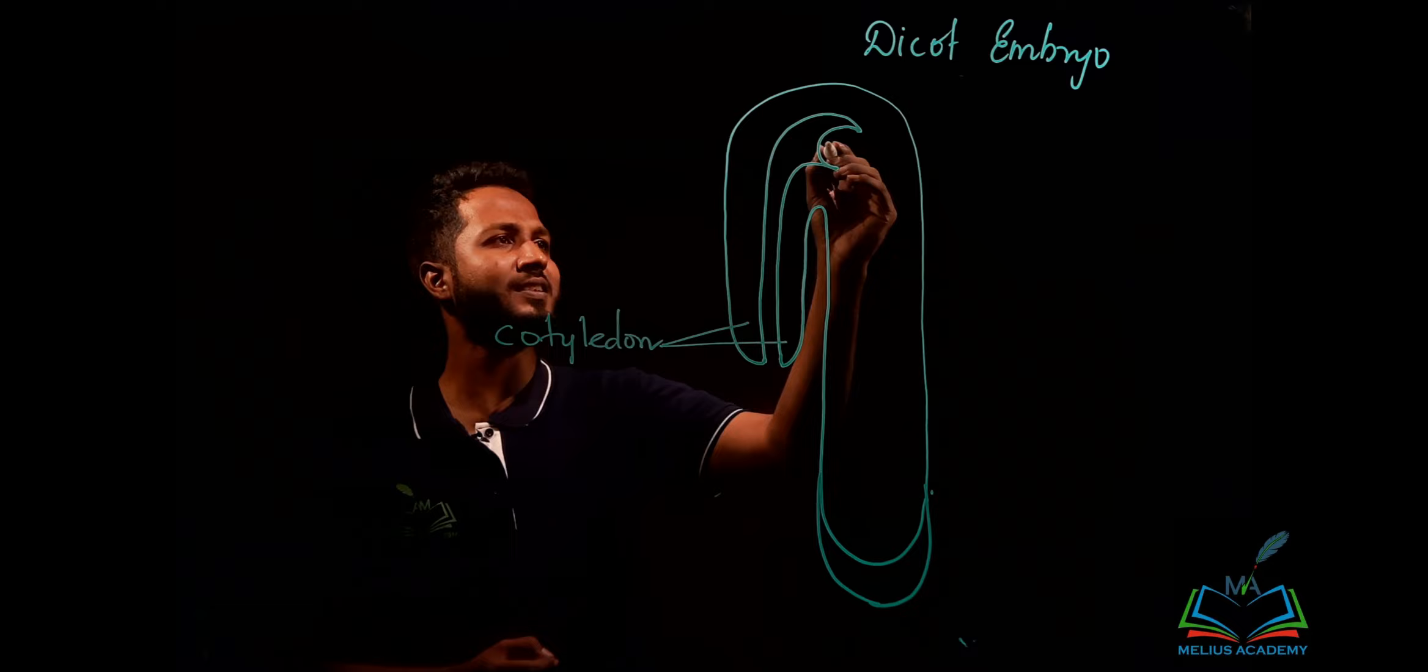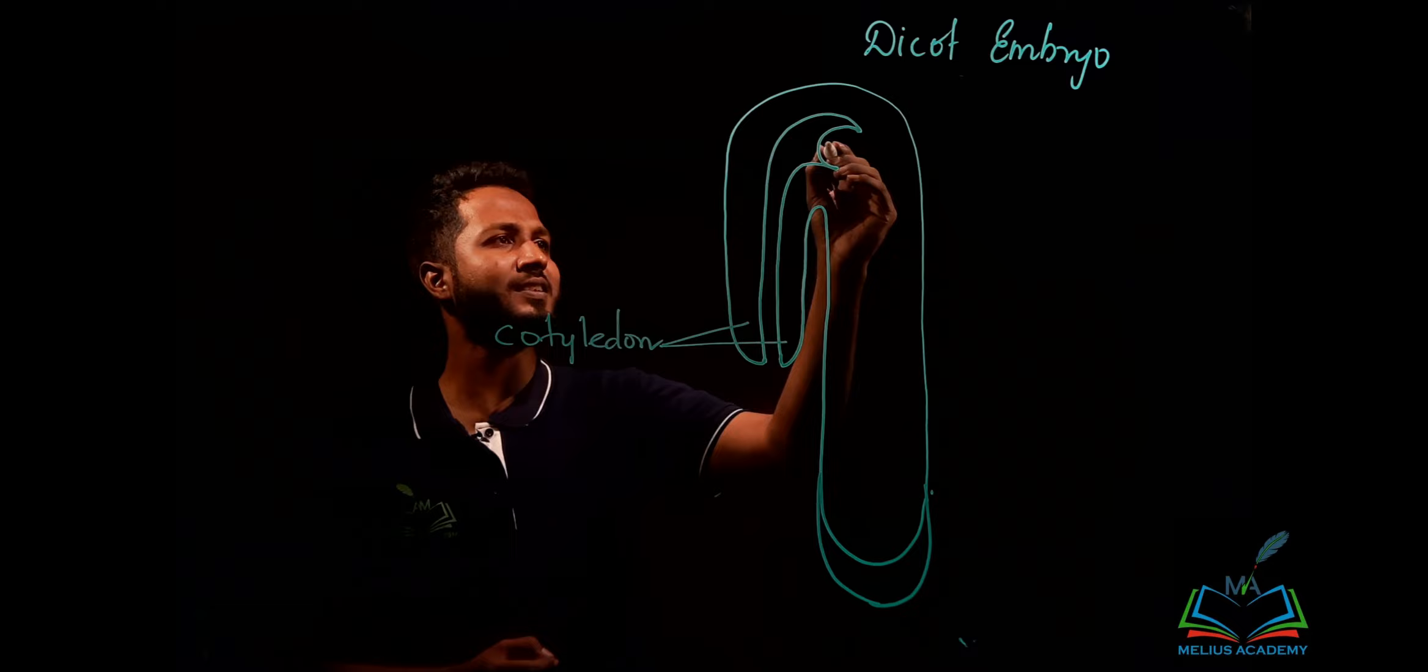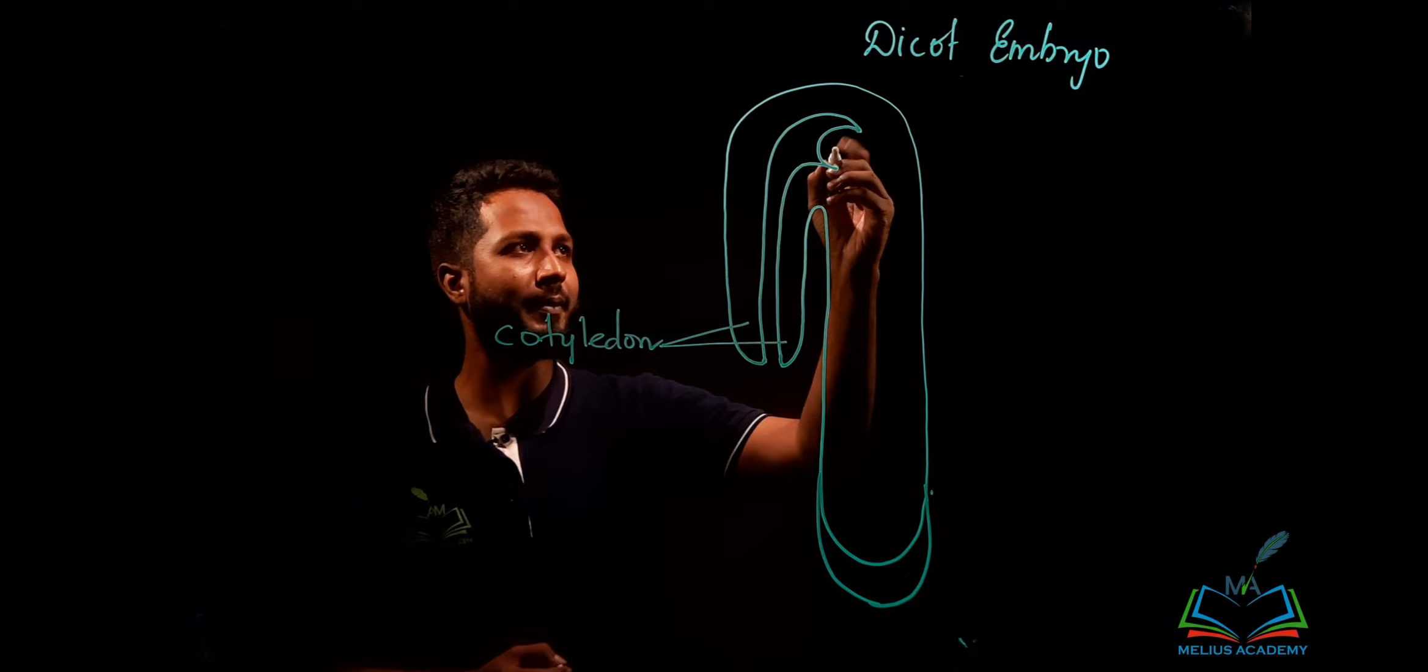Now, this region over here, since it is above the cotyledon, is known as epicotyl. In the epicotyl, we have shoot-developing tissue known as the plumule.